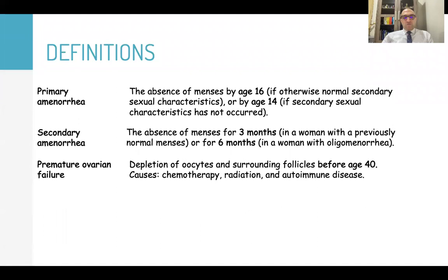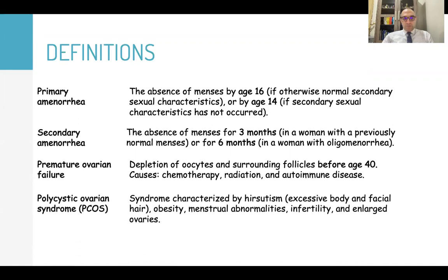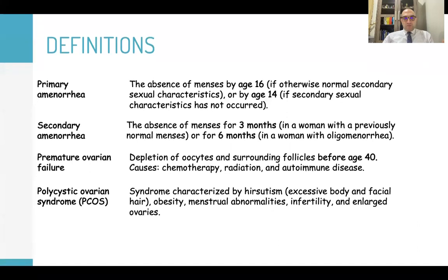Premature ovarian failure is depletion of oocytes and surrounding follicles before age of 40. Causes may be chemotherapy, radiation, or autoimmune disease. Polycystic ovarian syndrome is characterized by hirsutism — excessive body and facial hair — obesity, menstrual abnormality, infertility, and enlarged ovaries.